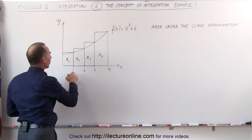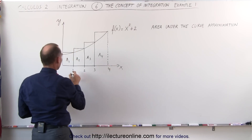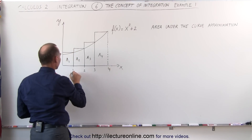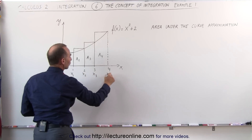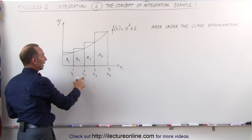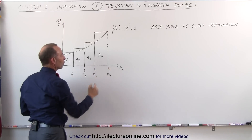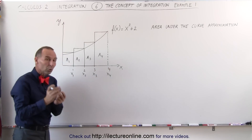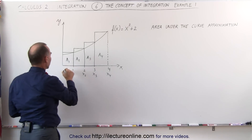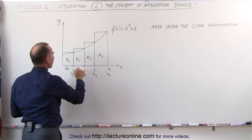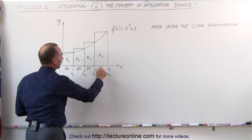x equals 4 is at the end here. Let's say that this is x1, x2, x3, and x4. x1 is equal to 1, x2 is equal to 2, x3 is equal to 3, and x4 is equal to 4. The width of each of the rectangles, let's call that delta x. So the width here is delta x, and each rectangle has width delta x.